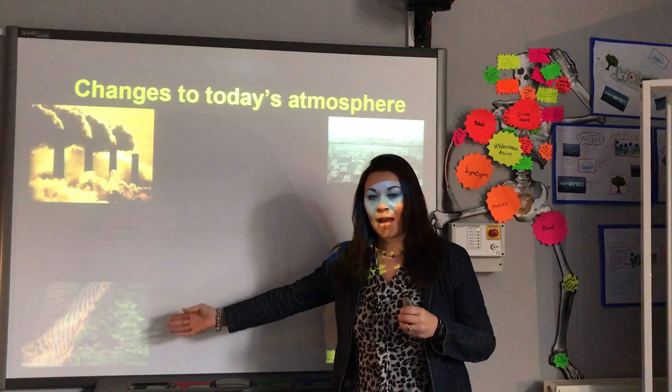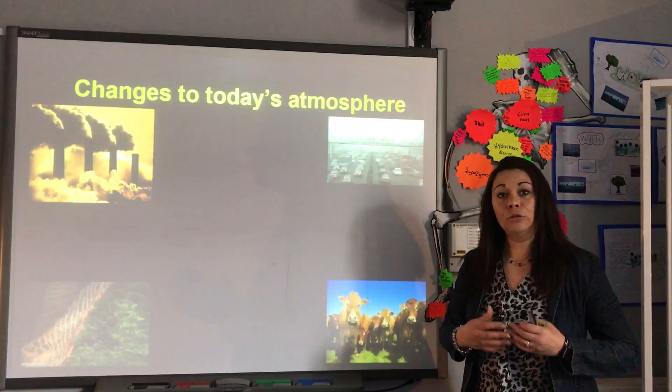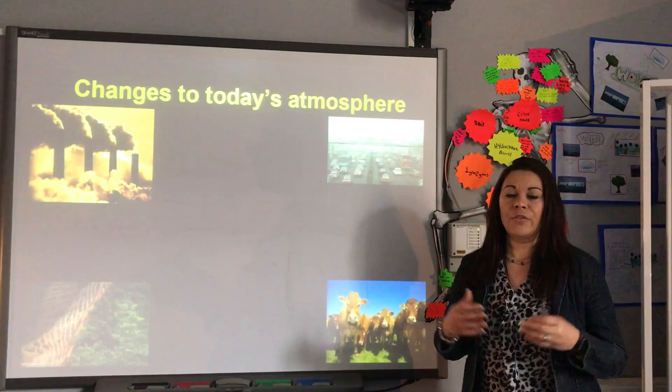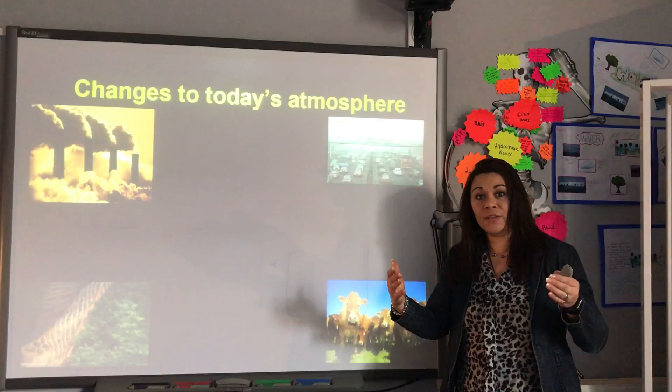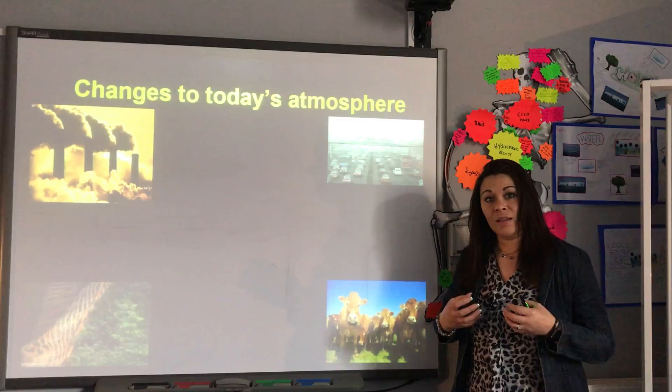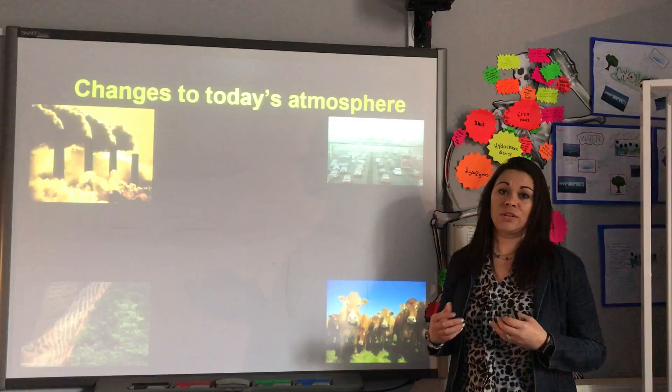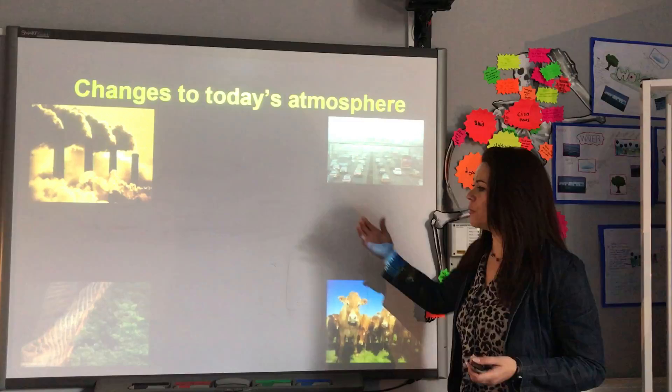Here we can see deforestation — lots of trees being chopped down for various reasons. Logging happens in the rainforest, where people are paid to chop down the trees. This leads to problems because trees help to maintain the carbon balance through photosynthesis. If all the trees are chopped down, there aren't enough of them to take in carbon dioxide from the atmosphere and give us oxygen. We need oxygen because we use it for respiration — without oxygen, we wouldn't be alive.